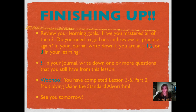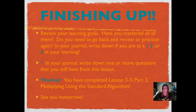Finishing up — go back and check out your learning goals. Check to see which ones you may need extra practice with. It may be that you can't remember which numbers to multiply by first, or you can't remember how to regroup, or maybe you're struggling with the digital root checking. We're going to keep practicing all of these things in class, but it's a good idea to write down your questions so you know exactly what to ask. Write down if you're at a 1, 2, or 3 learning level in your journal. Congratulations — you've completed Lesson 3-5 Part 2, Multiplying Using the Standard Algorithm. See you tomorrow.